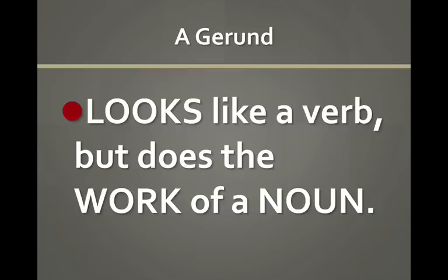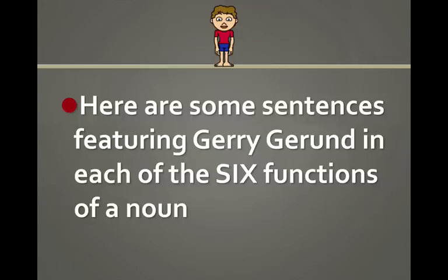Again, it looks like a verb, but it does the work of a noun. So we're going to take a look at some sentences in which Jerry Gerund — the verb form ending in -ing — is going to perform each of the six functions of a noun.